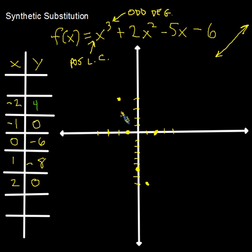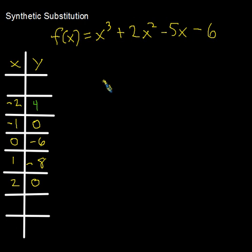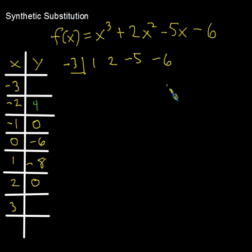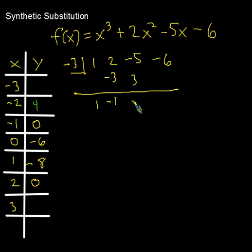With what we have, the graph could almost look like a parabola, so we need a few more dots. Let's try x equals negative 3 and positive 3. For x equals negative 3, coefficients 1, 2, negative 5, negative 6: we get 1; negative 3 times 1 is negative 3; 2 plus negative 3 is negative 1; negative 3 times negative 1 is positive 3; plus negative 5 is negative 2; negative 3 times negative 2 is positive 6; plus negative 6 gives 0. So when x is negative 3, y is 0.